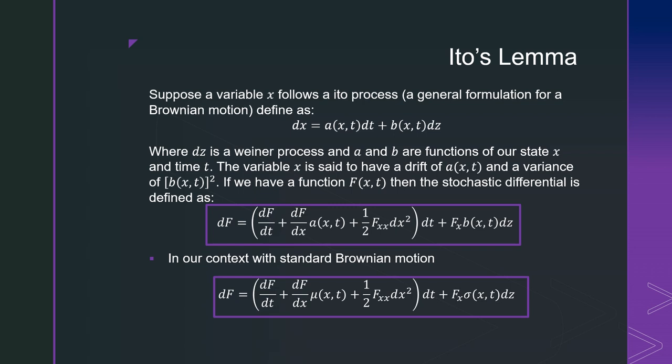Now, what we want to know is how do we take derivatives of functions that are parameterized by these processes that follow a Brownian motion? We're going to say a variable x follows an Ito process. This is just a general formulation of a Brownian motion, defined as follows where dz is a Wiener process, and a and b are functions of our state x and time. Variable x is said to have a drift of a and variance of b squared.